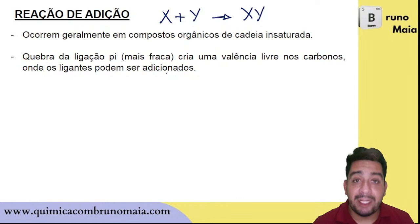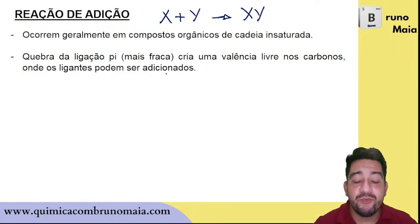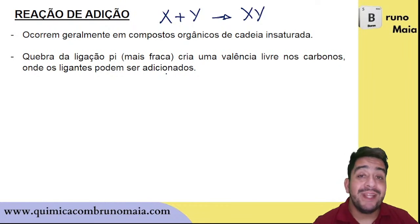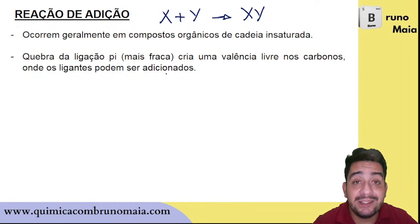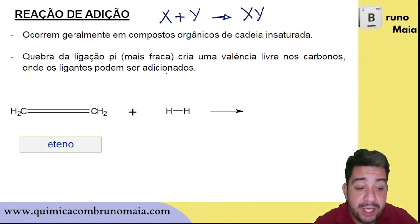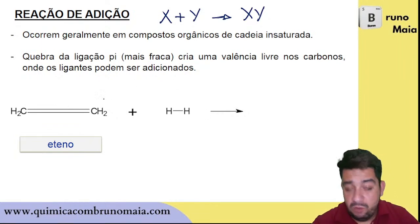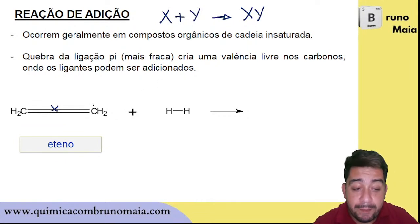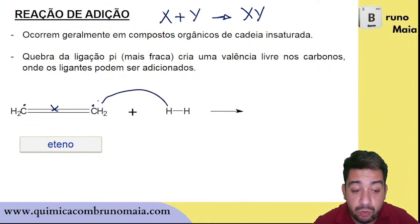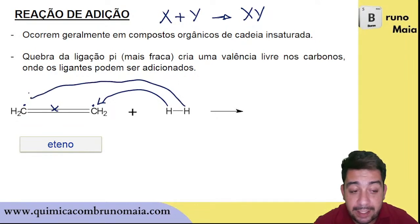This means that if I have a saturated carbon, I don't have room to add any more ligands on that carbon. For me to be able to add something, I have to have a possibility of entry of atoms into my carbon. That's why addition occurs when I have a pi bond — because a pi bond is weaker. For example, here in ethene, any amount of energy sufficient to break this pi bond breaks it, and then I create a possibility of bonding in each carbon. As I am going to add H₂, one atom of hydrogen enters each carbon.